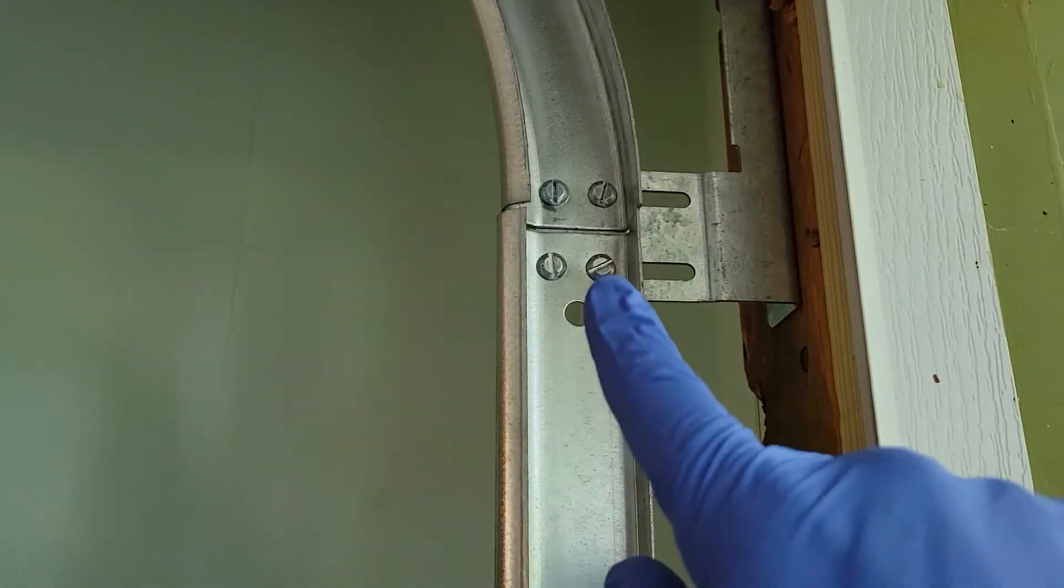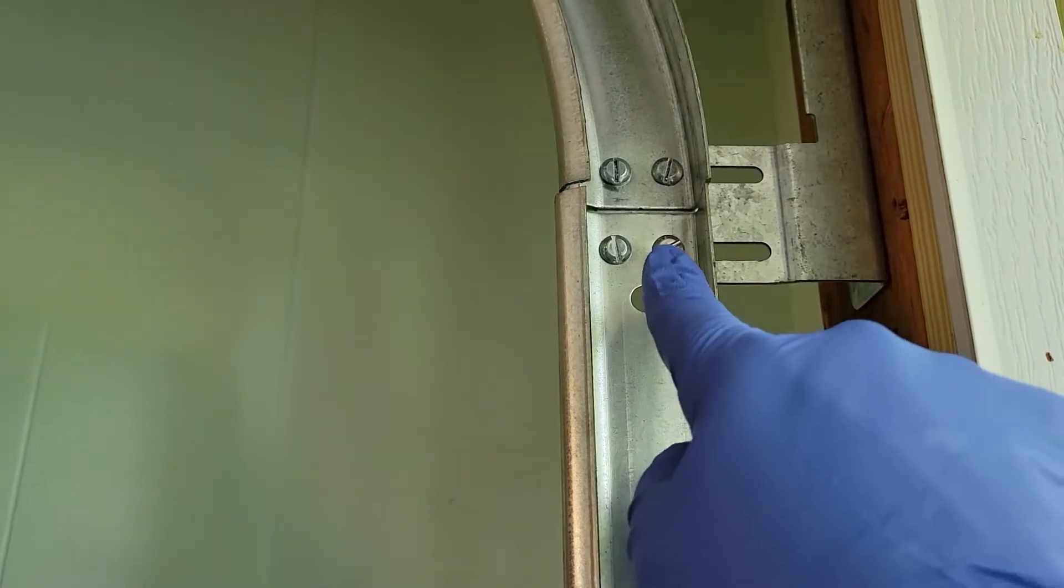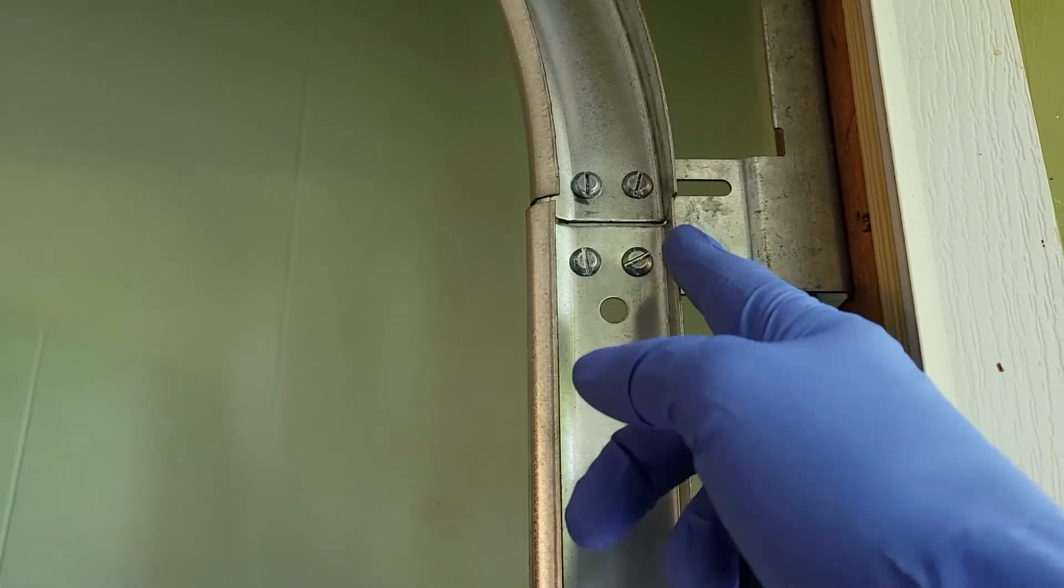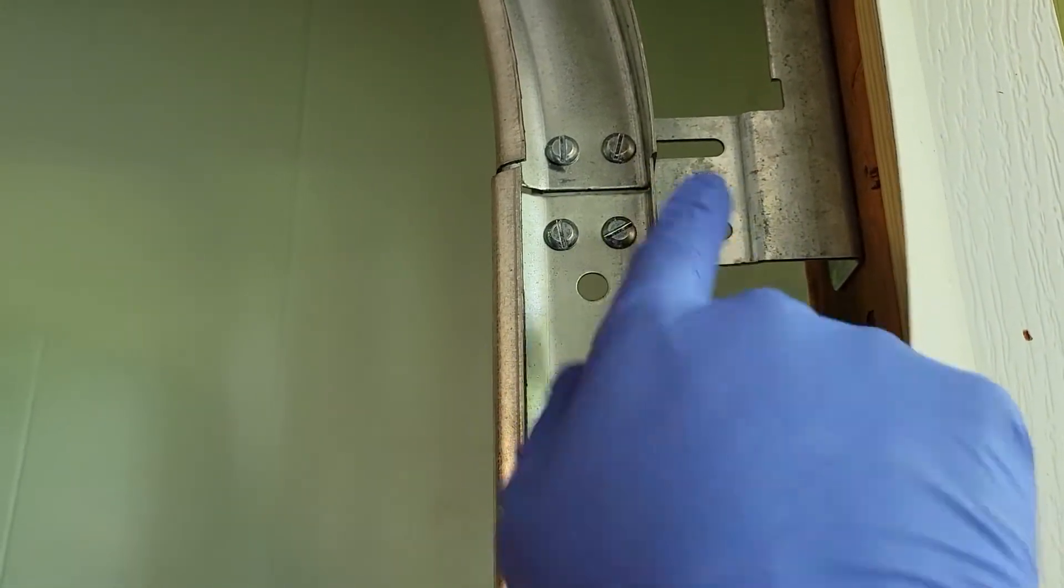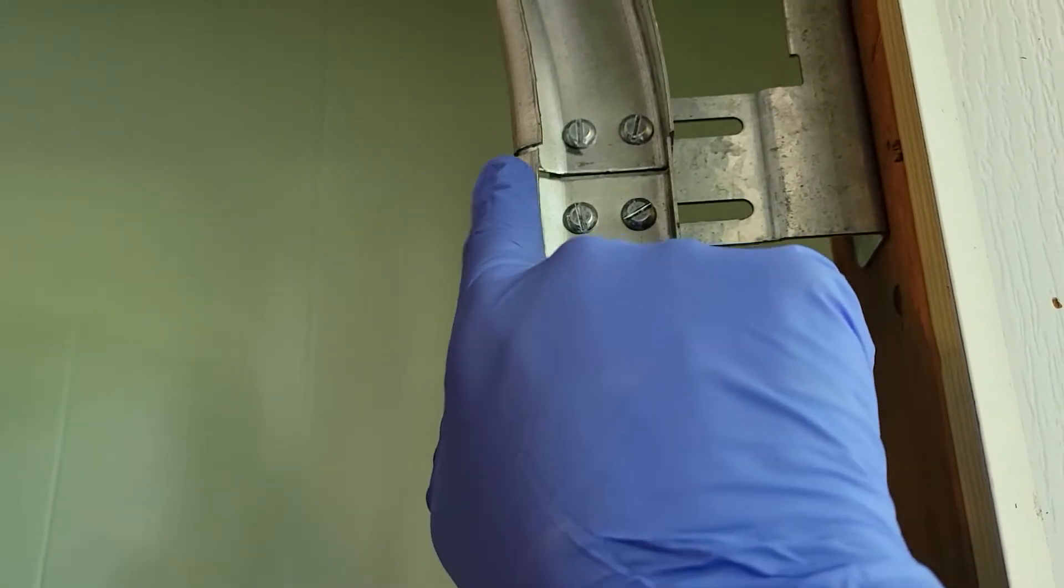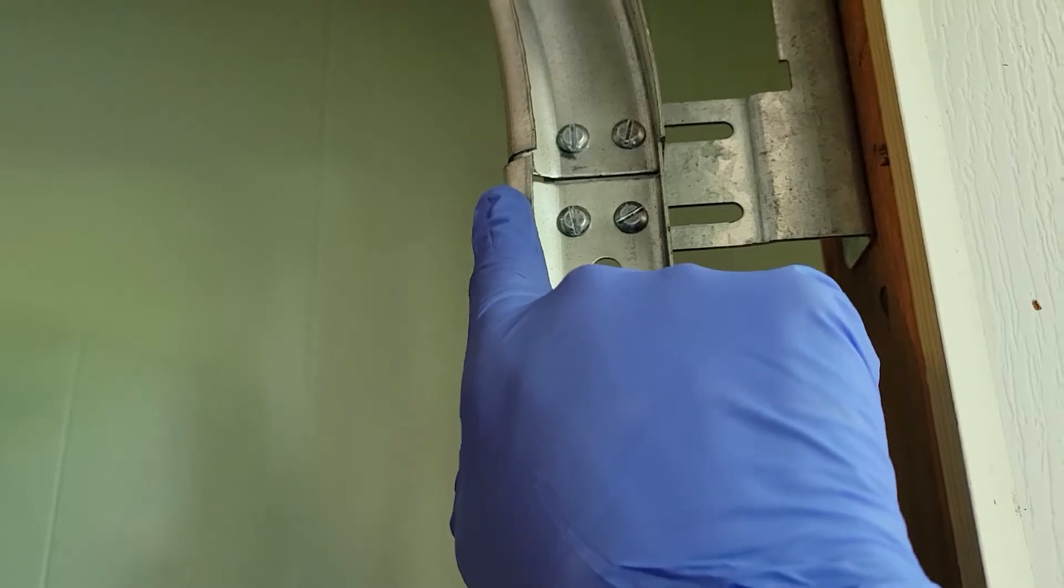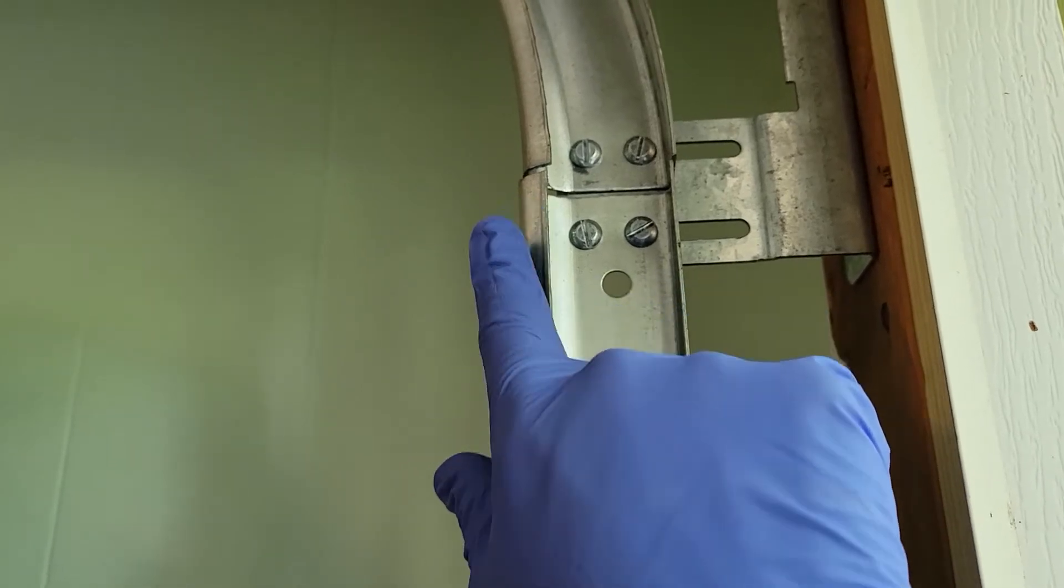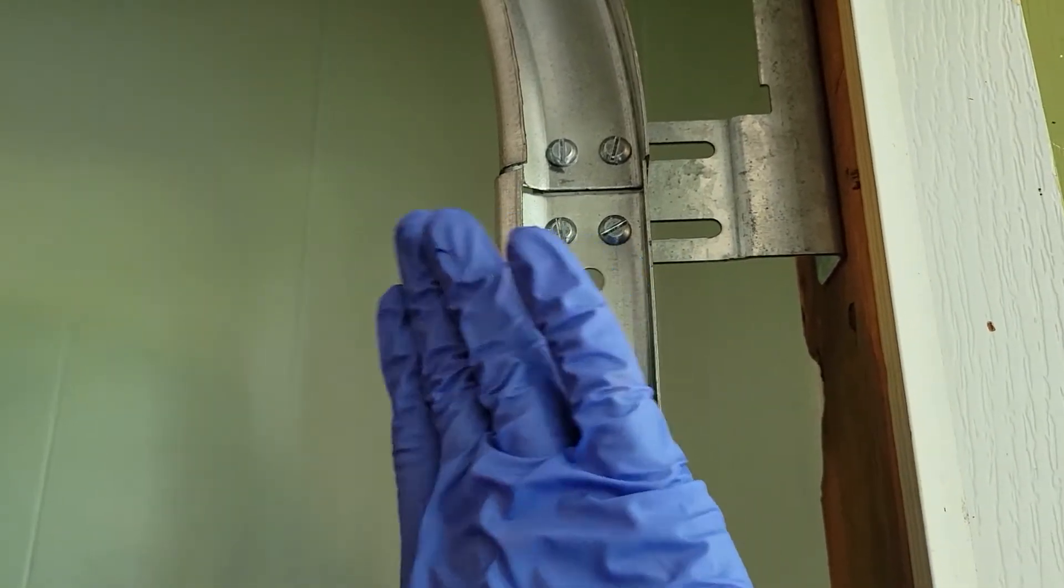So what I've decided to do is loosen these two fasteners. I'm going to slide this forward enough so that it's flush on this side, and if I still have a bit of a gap here, I may try just a rubber mallet to move this rail.